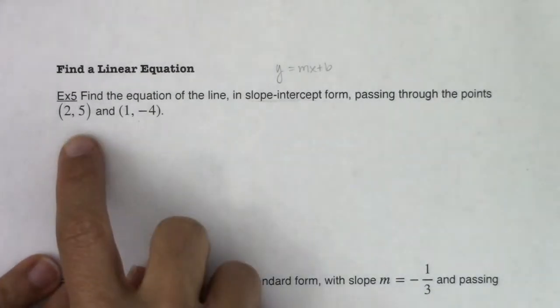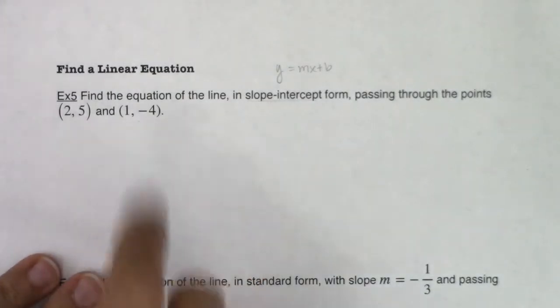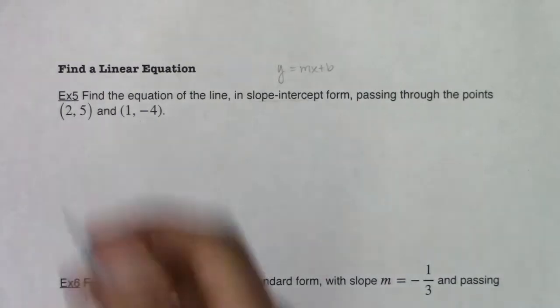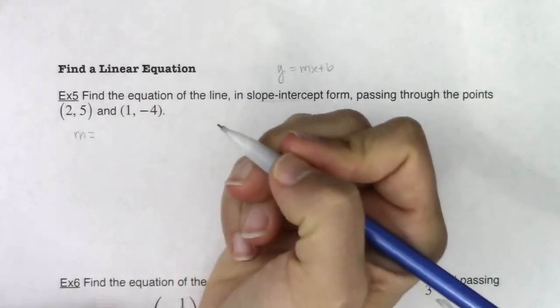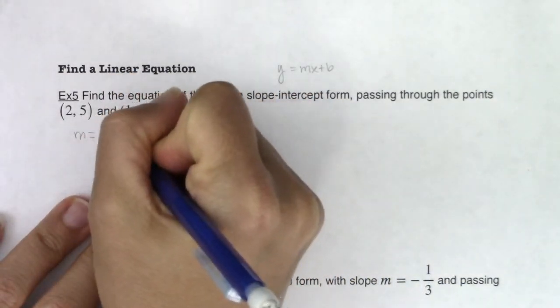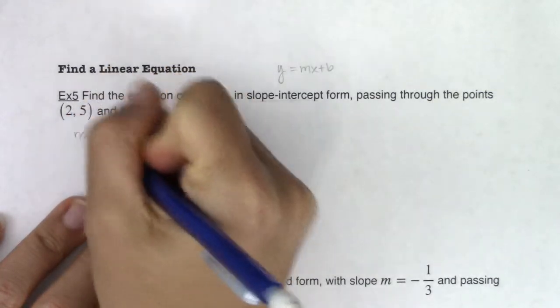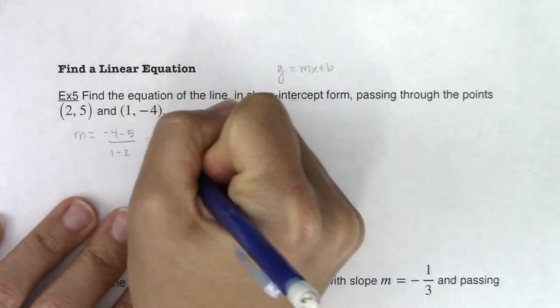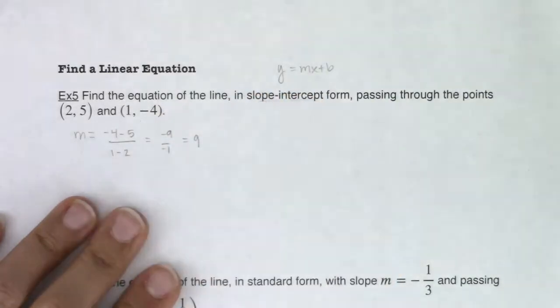The first thing I see is that I've got two points. So, okay, great. If I have two points, the easiest thing for me to do is to find the slope between them. So I'm going to find the change in y over the change in x. So I'm going to go change in y, -4 minus 5, over change in x, 1 minus 2. So I'm looking at -9 over -1. So I see my slope is 9.